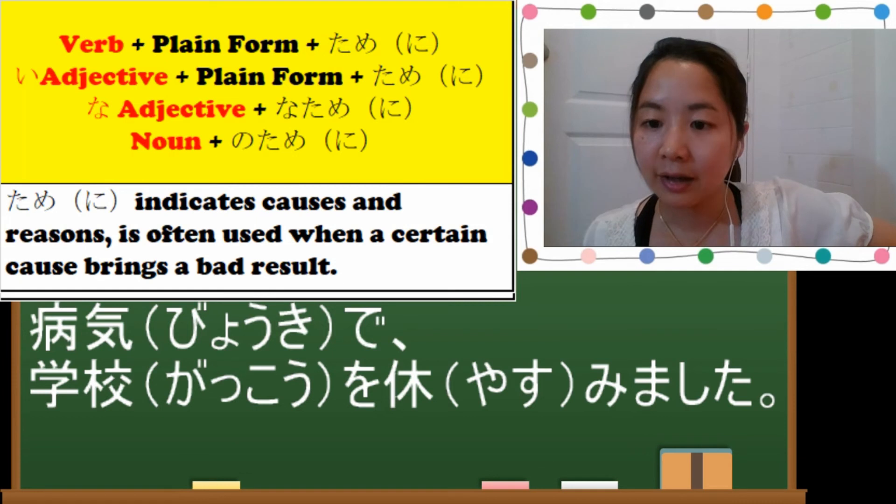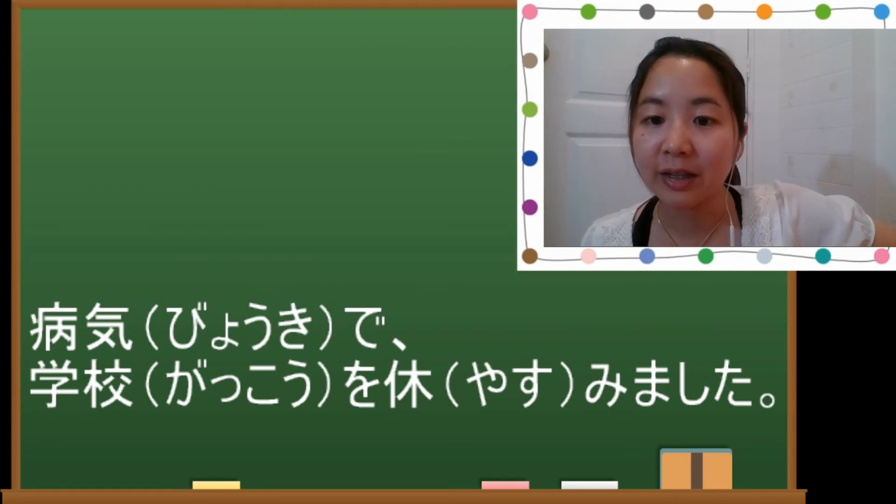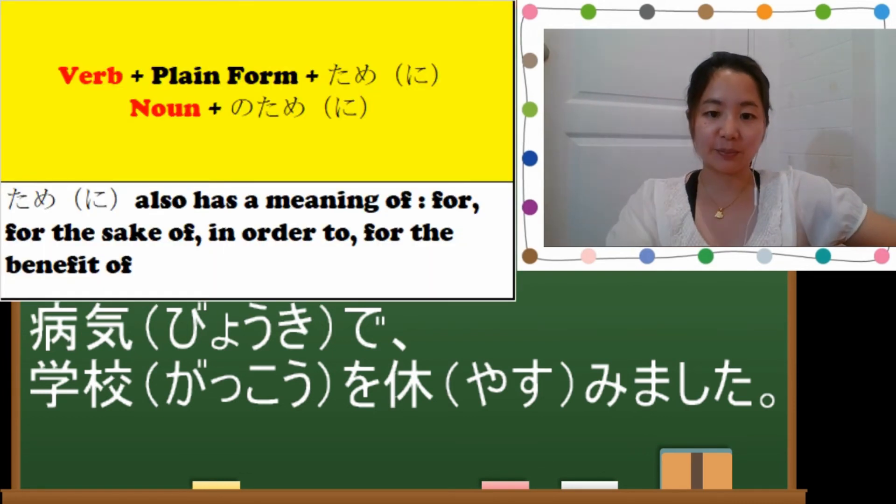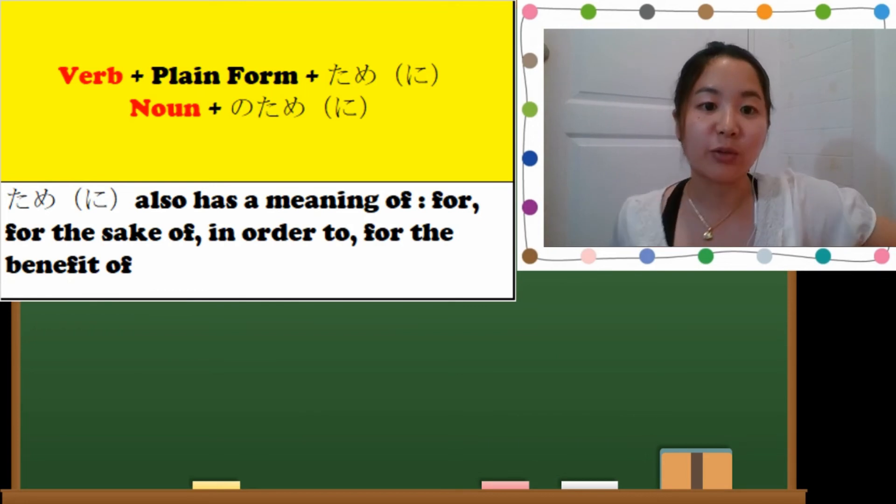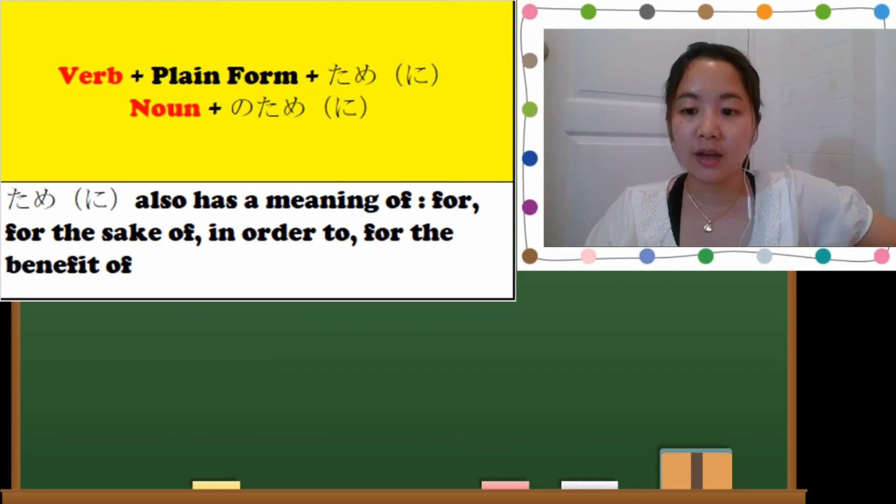Byouki no tame-ni. And another usage of tame-ni. So this is not the reason or causes, but tame or tame-ni means another meaning: for, for the sake of, in order to, for the benefit of. If I want to say I am studying Japanese for you, I am studying Japanese for you. So let's say your boyfriend or girlfriend is Japanese, so in order to speak with them you are learning Japanese.